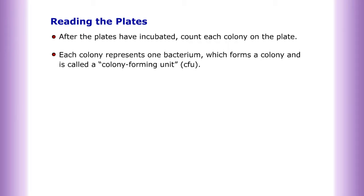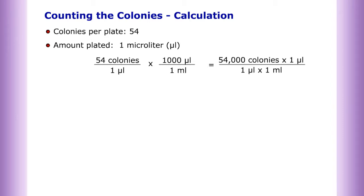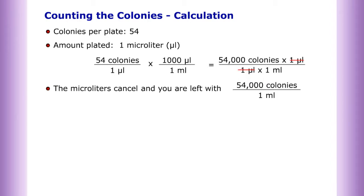Each colony represents one bacterium which forms a colony and is called a colony forming unit. Count the number of colonies on the plate — this is the number of colonies per one microliter of urine. Use the conversion factor to convert one microliter to one milliliter. For example: 54 colonies per plate, divided by one microliter plated — the microliters cancel and you are left with 54,000 colonies per one milliliter.